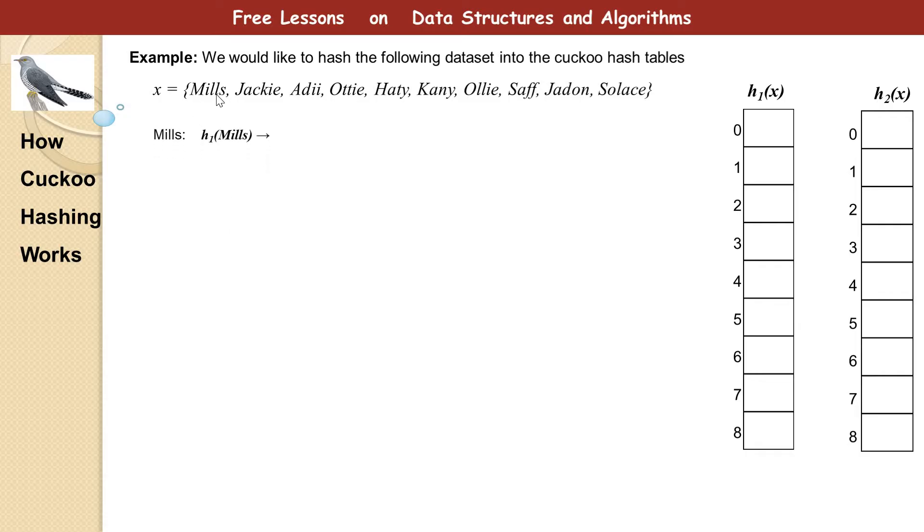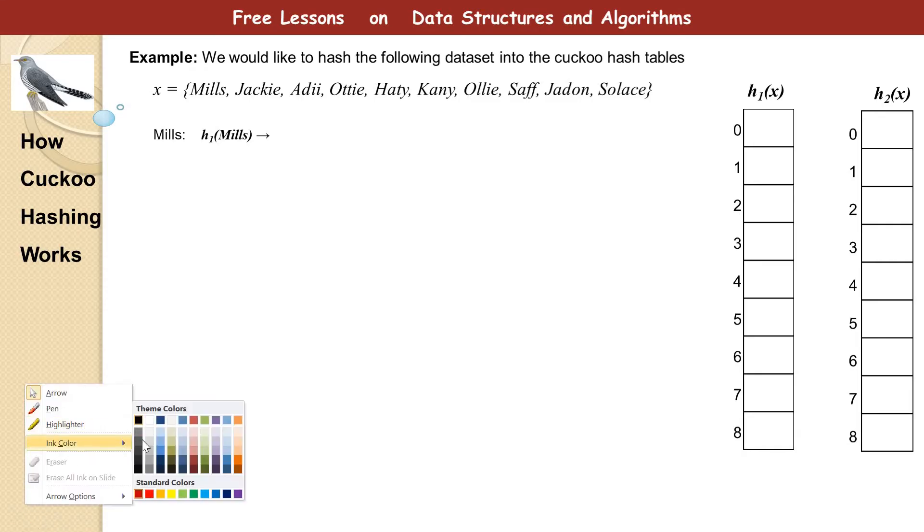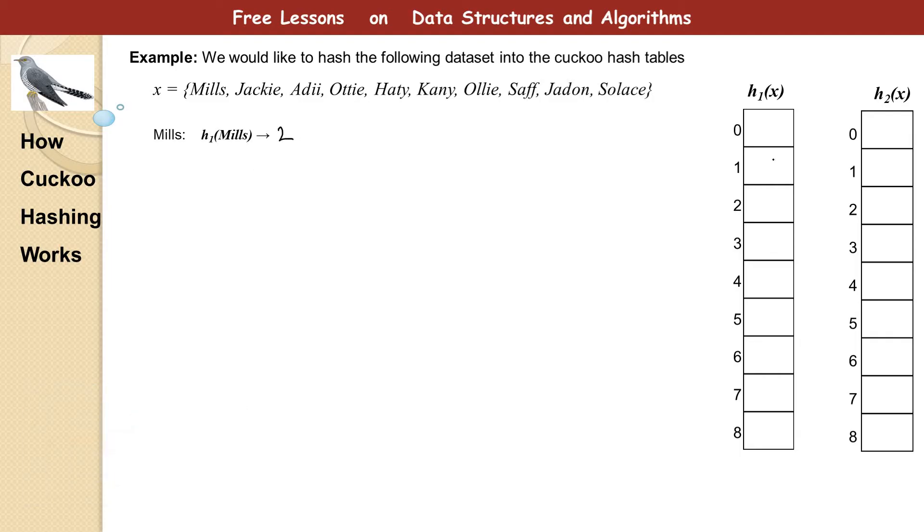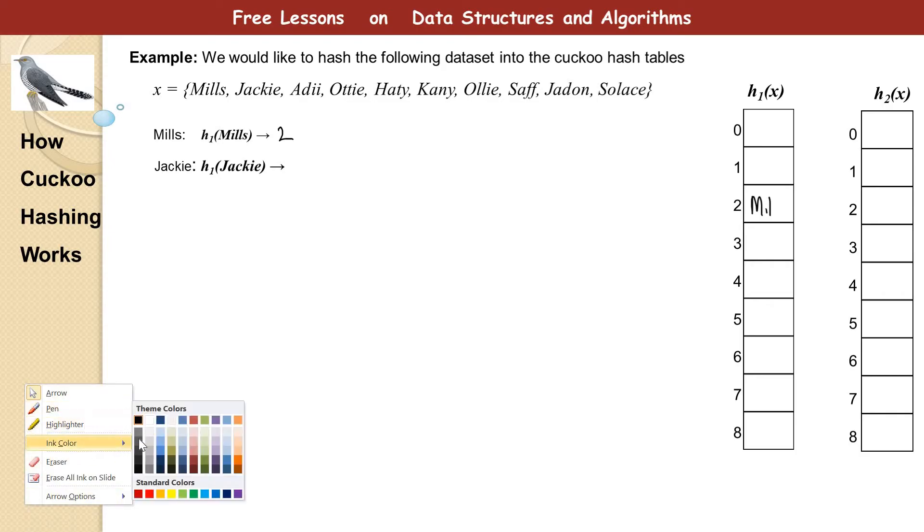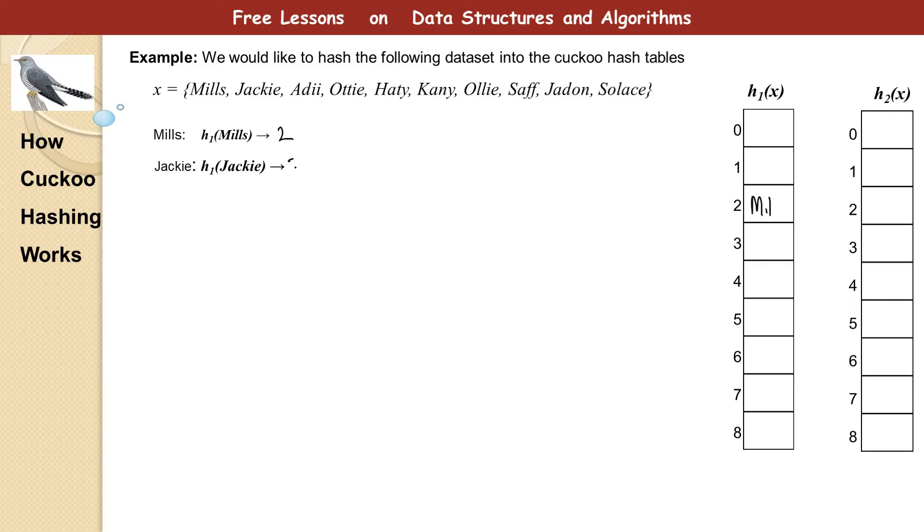We want to hash Mils, the first item. h1 of Mils gives us two. So we put it here. Let's just call it Mil. So let's go to the next one. So h1 of Jackie, that is the next item, gives us three. So no problem. We put it there. Jackie.